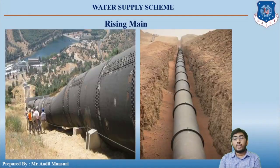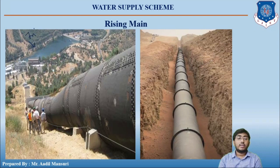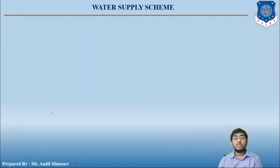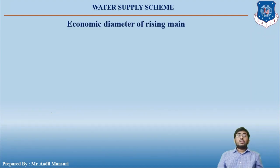Looking at the diagram, at the bottom is the intake or source, and from the intake the water is transferred to the water treatment plant. The next topic of discussion is the economic diameter of the rising main.